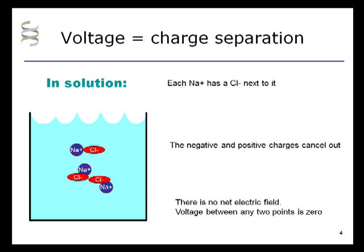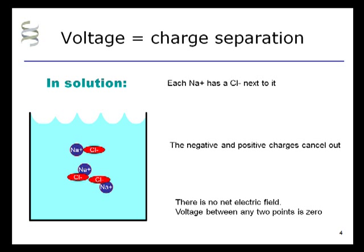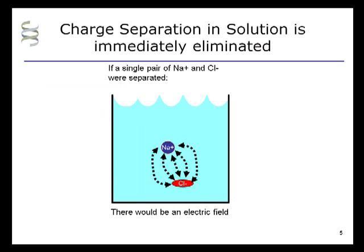What is voltage? Voltage is charge separation — they are effectively the same thing. In a solution of salt water, each sodium ion has a chloride ion next to it. The negative and positive charges cancel out, and thus there is no electric field. The voltage between any two points is, for all intents and purposes, zero, because any charge separation that happens in solution is immediately eliminated.